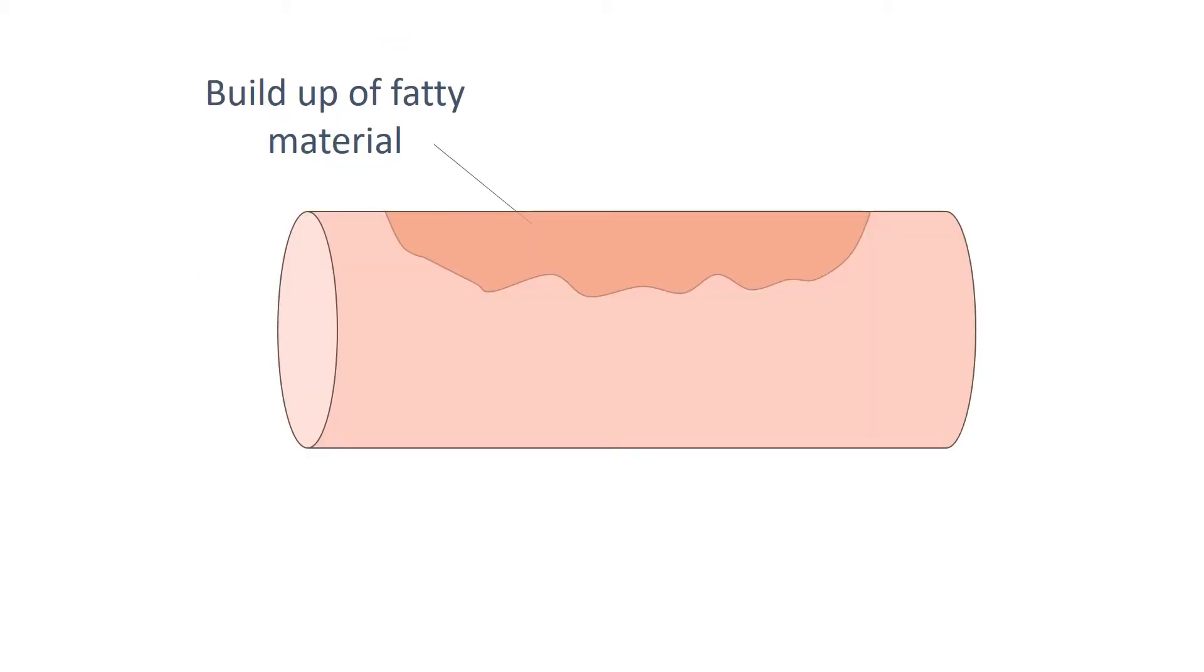Stents can be used to keep the coronary arteries open. A small balloon is placed in the artery and is inflated to open up the blood vessel and the stent, which is a metal mesh that opens up the arteries. The balloon is deflated and removed, leaving the stent holding the artery open.